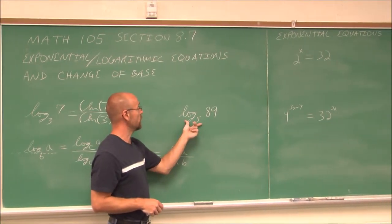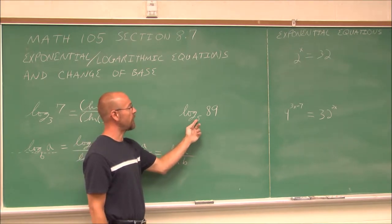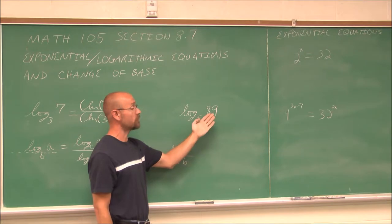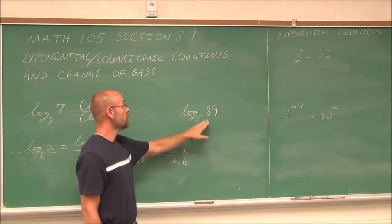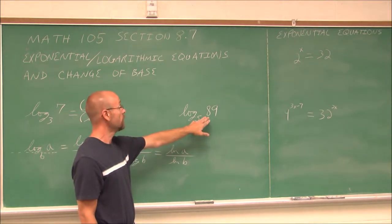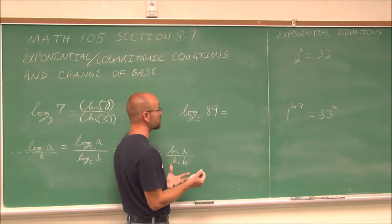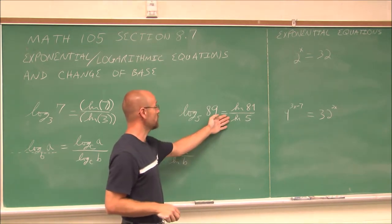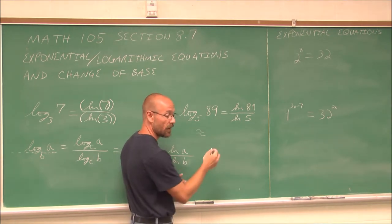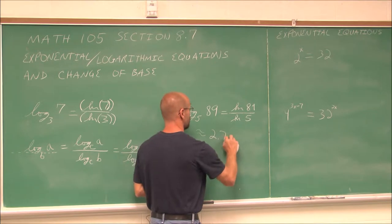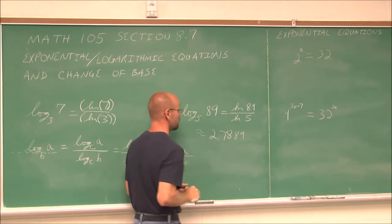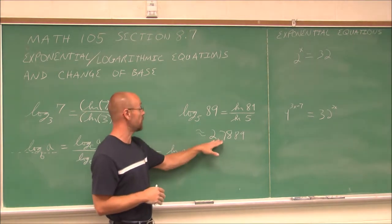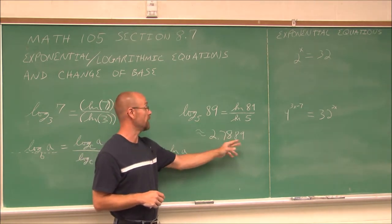Here's an example we can work out. Estimating: I know 5 squared is 25 and 5 cubed is 125, so the value is between 25 and 125, meaning the power is somewhere between 2 and 3. To find a closer value, I use natural log: ln of the argument divided by ln of the base. Putting this into my calculator gives an approximate value of 2.7889, which is indeed between 2 and 3 — so my estimate was accurate.